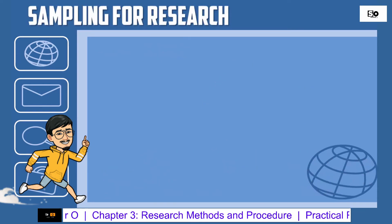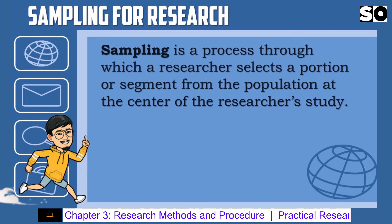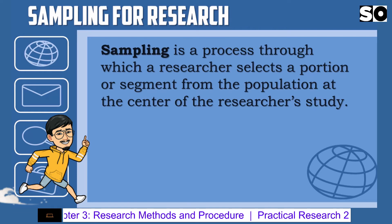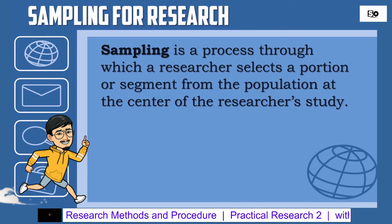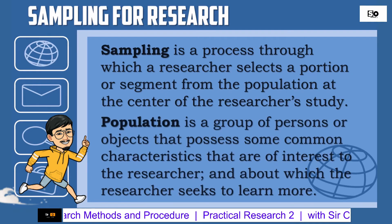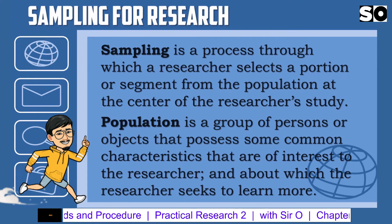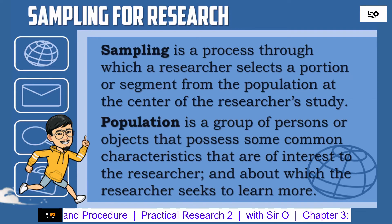Sampling for Research. Sampling is a process through which a researcher selects a portion or segment from the population at the center of the researcher's study. Population is a group of persons or objects that possesses some common characteristics that are of interest to the researcher and about which the researcher seeks to learn more.